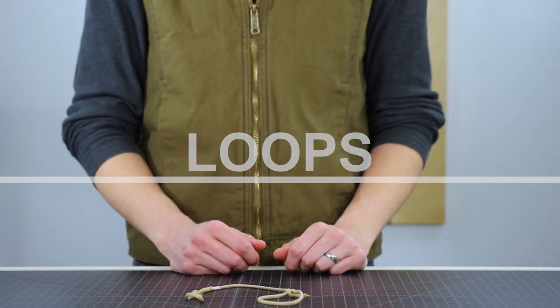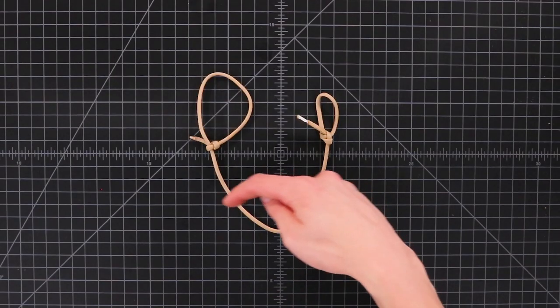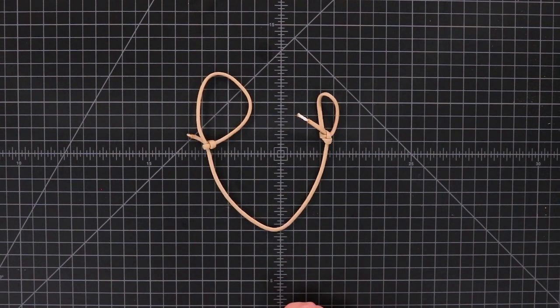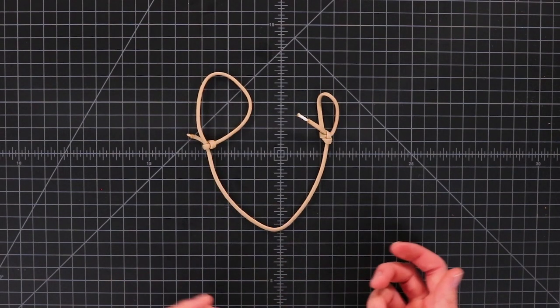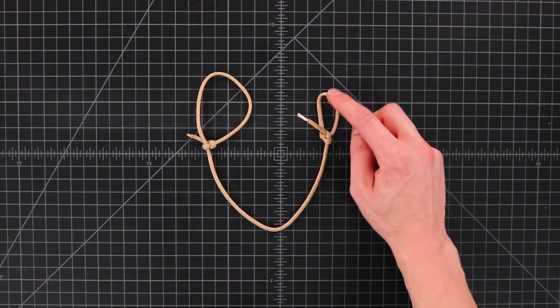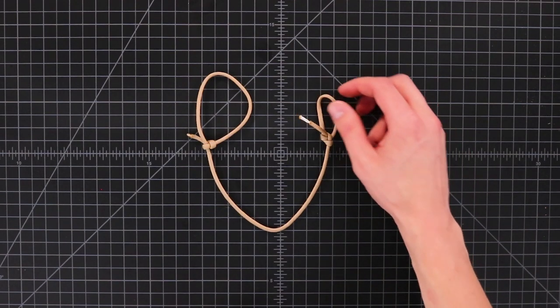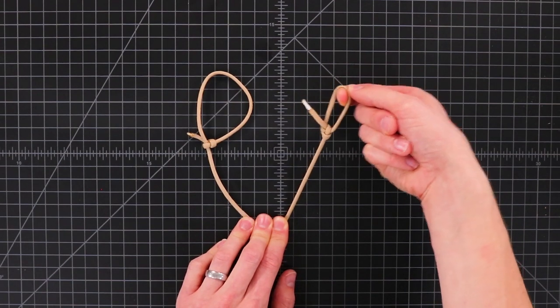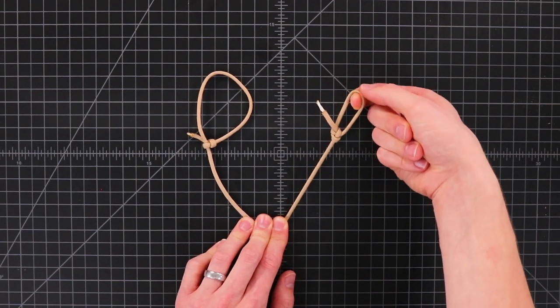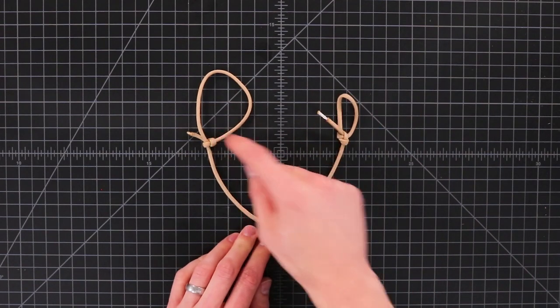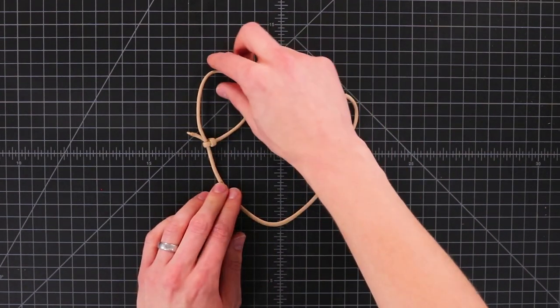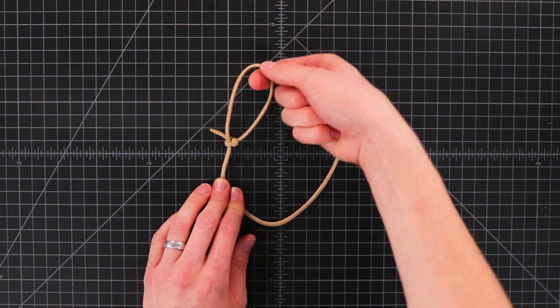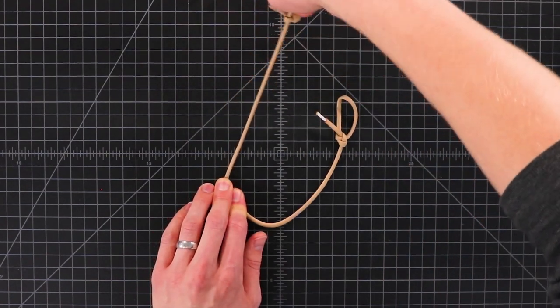Our first category of knots is loops. A loop is just when a rope loops back on itself and attaches to its own standing end. There's two main kinds of loops. On this end I have a bowline which is a fixed loop. If I pull on that it's not going anywhere. It's not going to slide and it's not going to lose its shape. But on this end I've got a slip knot, just a simple overhand knot tied over its own standing end. And if I pull that it's going to slide and tighten.